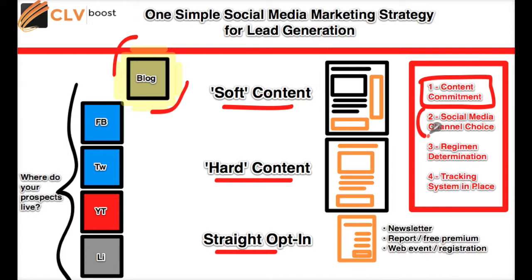The second decision to make is what is going to be the social media channel of choice — where do your prospects live and what is conducive to your market? If you sell to a younger audience and sell anything related to fitness or puppies or other things people like to take pictures of, you may want to hang out on Instagram. If you deal with business folks in the tech space, you may find yourself on Twitter for the best engagement. If your product or service can be easily conveyed via video, then YouTube or a video channel like Vimeo may in fact be helpful for you.